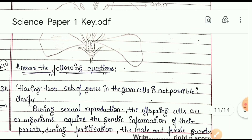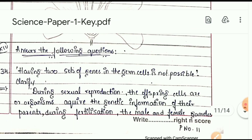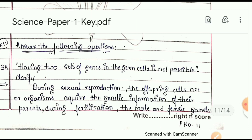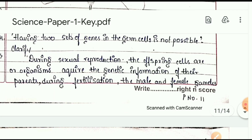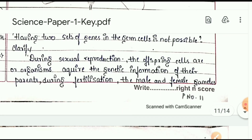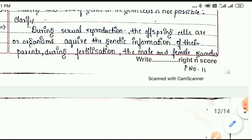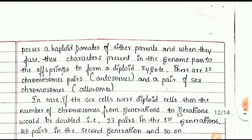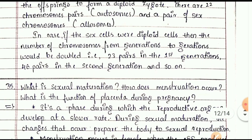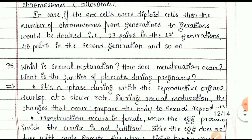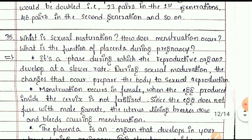Questions 34 to 36 are three-mark questions. Having two sets of genes in the germ cells is not possible — clarify this statement.